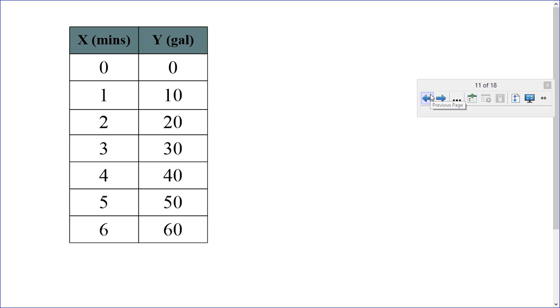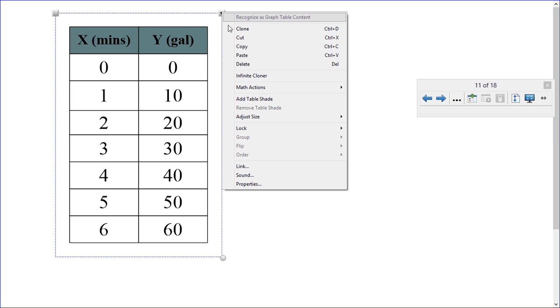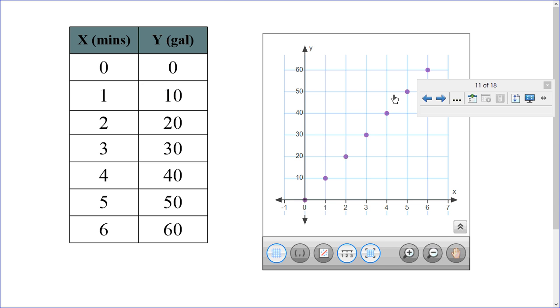Here is our table. X would represent the minutes. Y would represent the gallons. So, we have to graph this in a coordinate plane. Let's select this and go to our math actions, generate graph, and here is the graph.